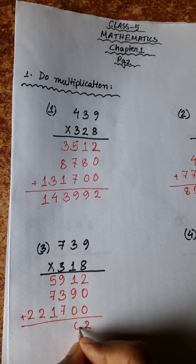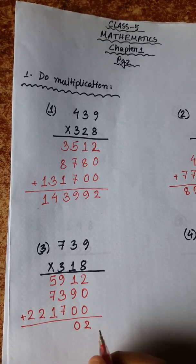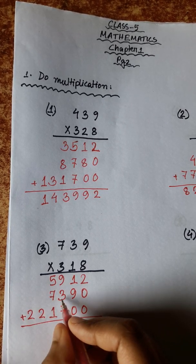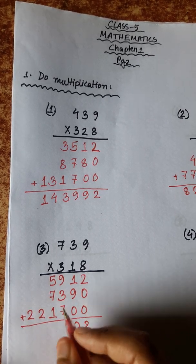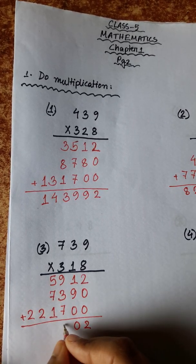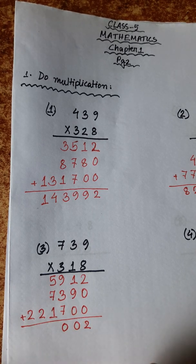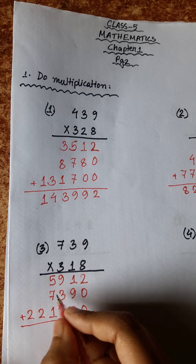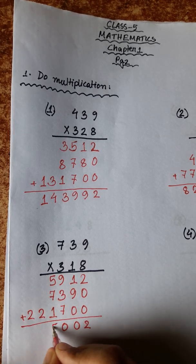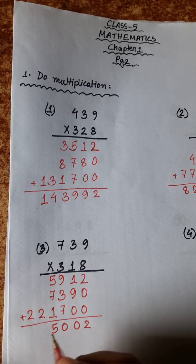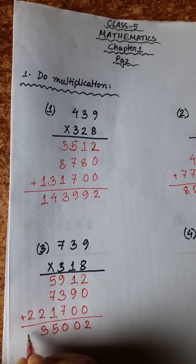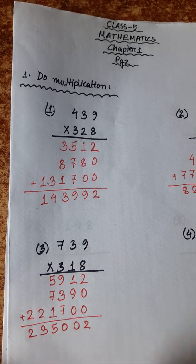9 plus 1 is 10, carry 1. 7 plus 1 is 8, plus 3 is 11, plus 9 is 20, carry 2. 12 plus 1 is 11, carry 2. 7 plus 3 is 11, carry 2.